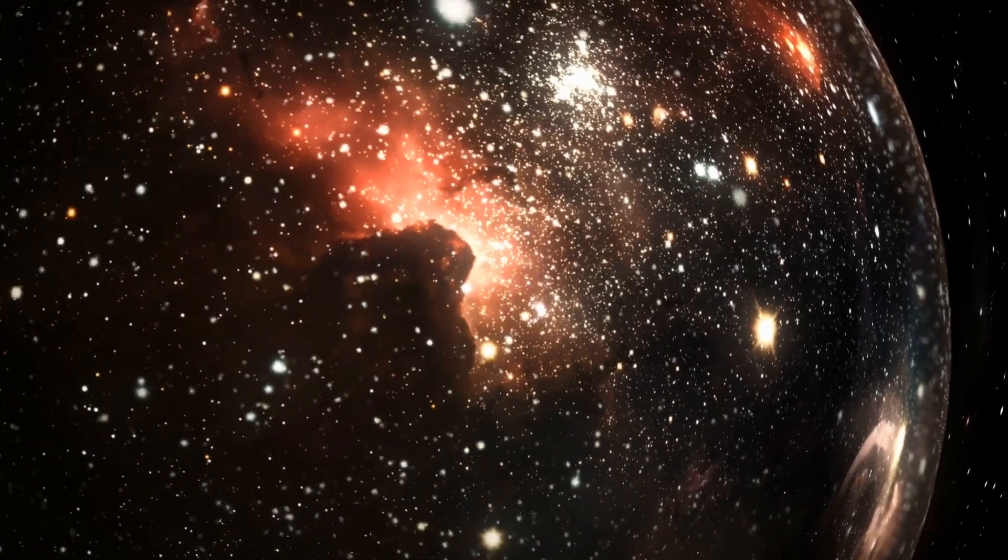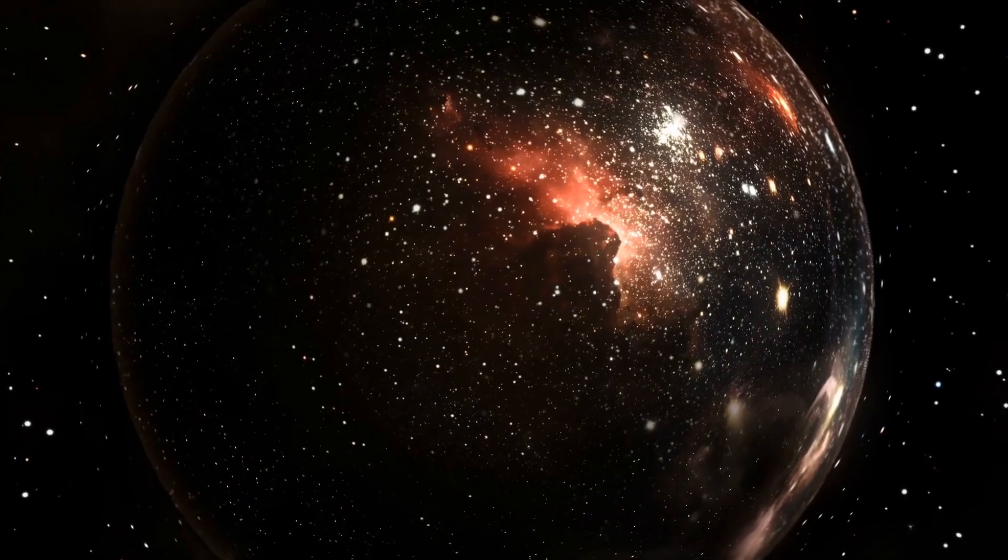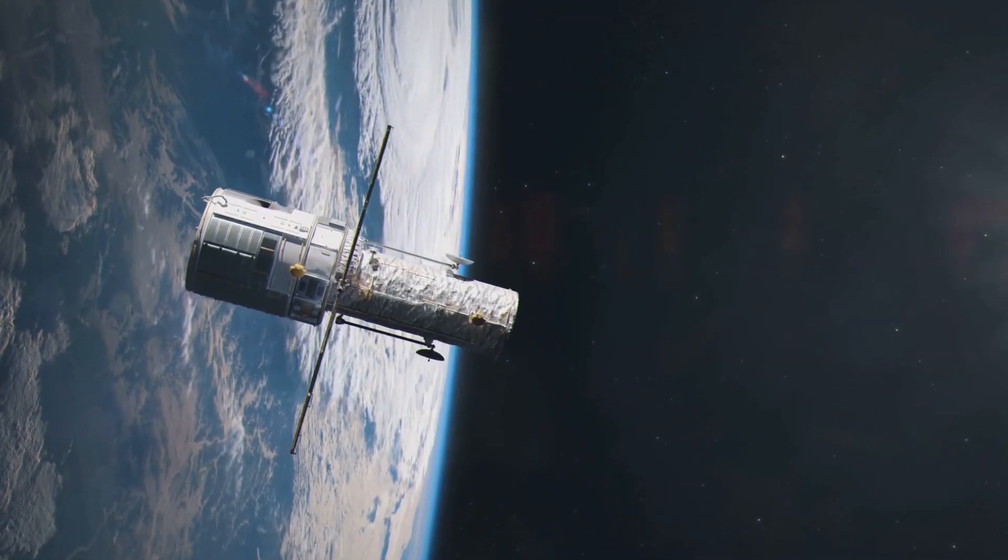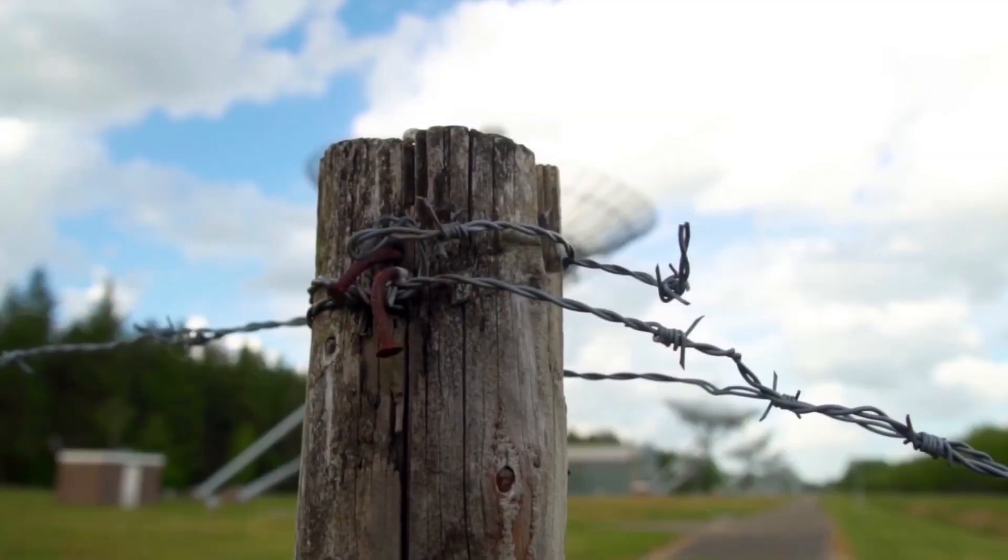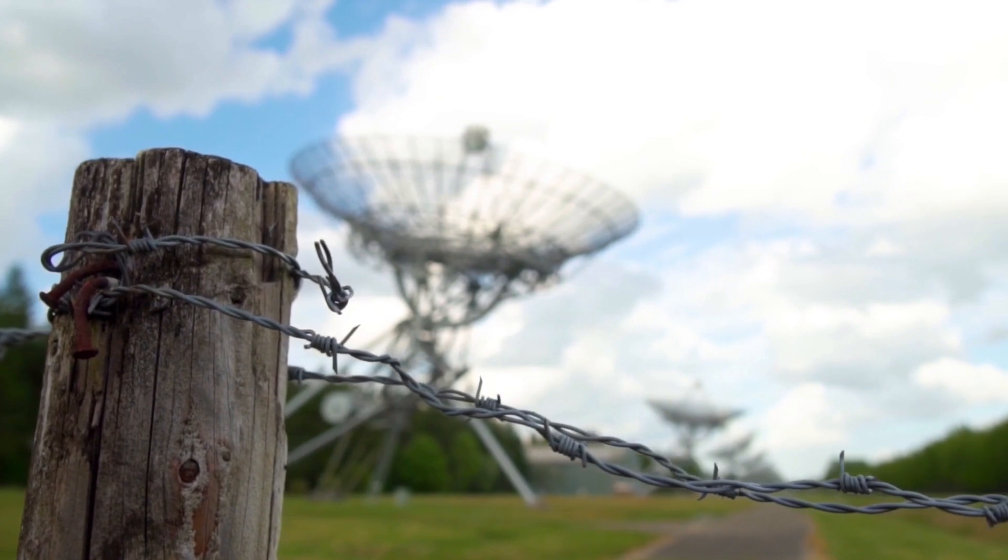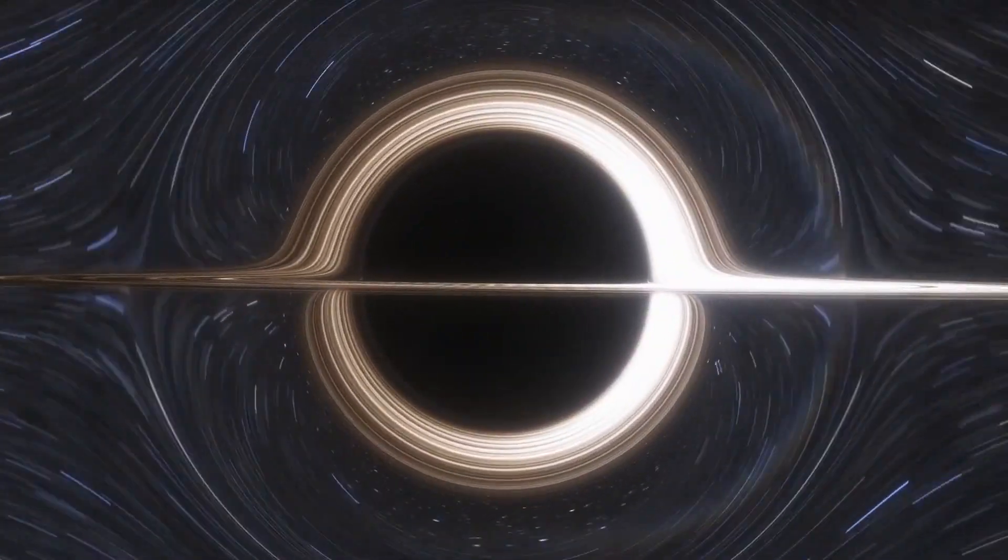There's still much to learn about what happens to time and space inside a black hole, so the more we study them, the more we can learn. The Event Horizon Telescope Project creates images of black holes. It uses a global network of radio observatories in unison to effectively create an Earth-sized telescope. It was how the first-ever image of a black hole was captured.